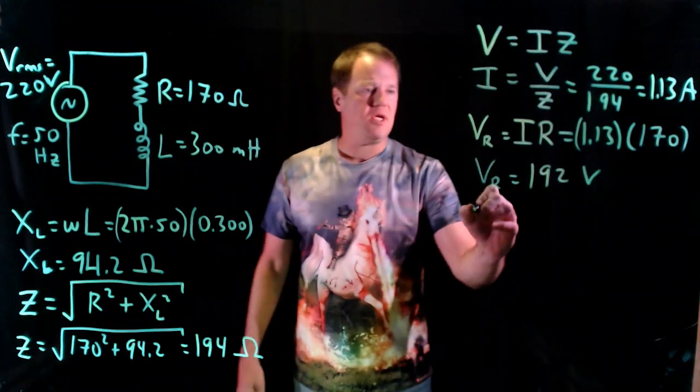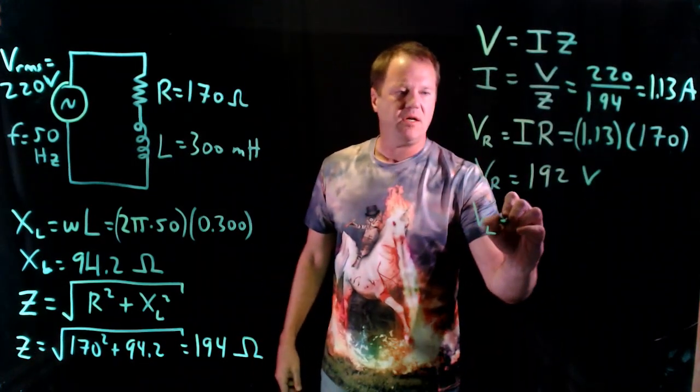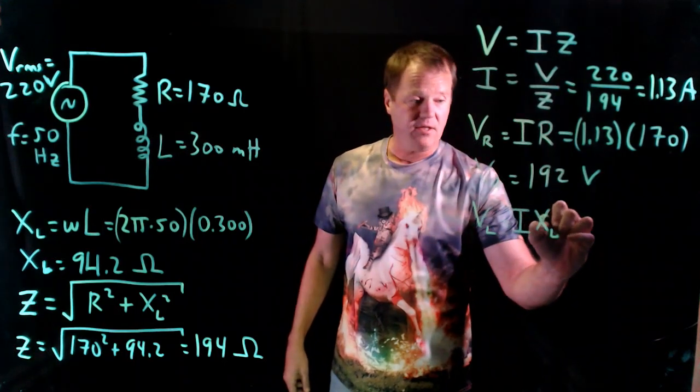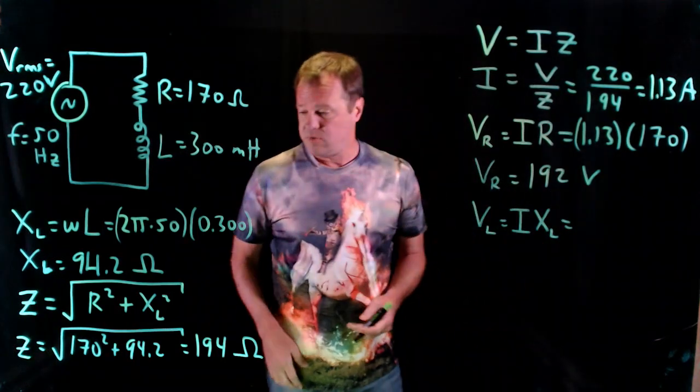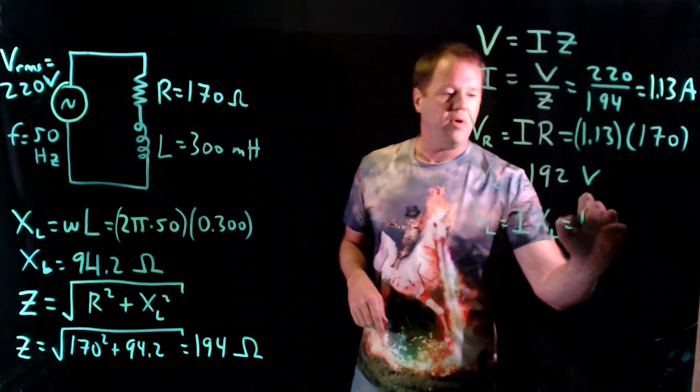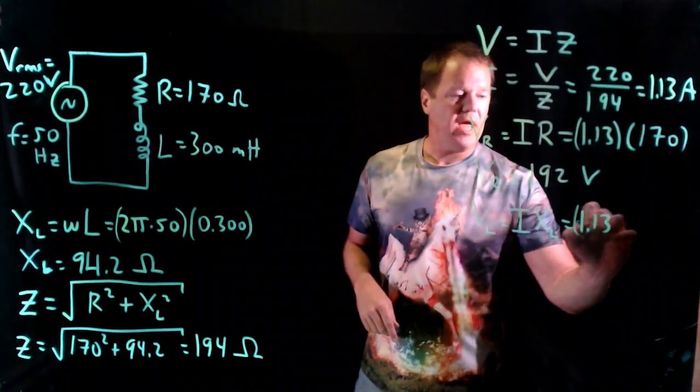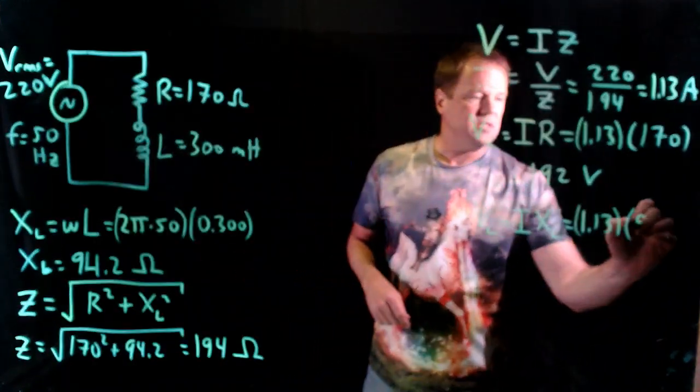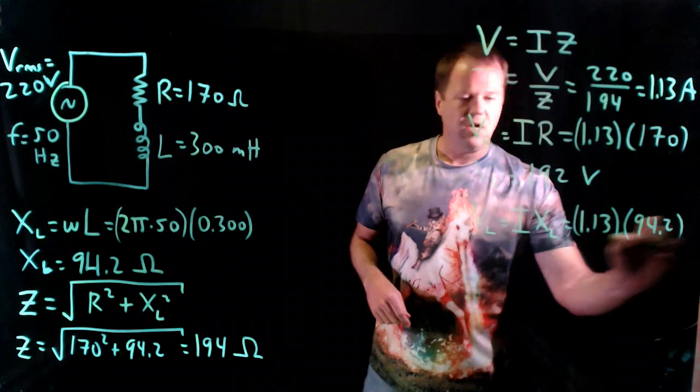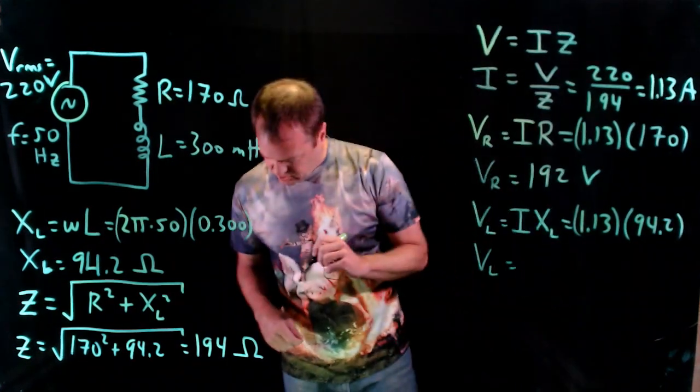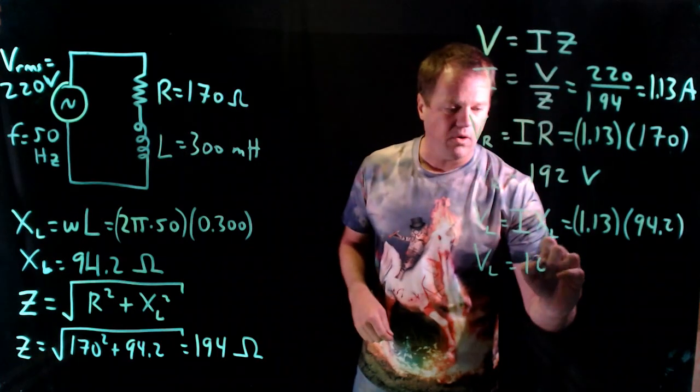And I can do likewise with the inductor. Voltage across the inductor will be the current through the inductor times the inductive reactance. So a formula that looks a lot like Ohm's Law, just replacing R with an X. And I take that 1.13 amperes, the inductive reactance is 94.2, I throw that into my calculator, and it tells me that the voltage across the inductor is 106 volts.